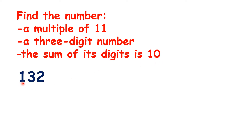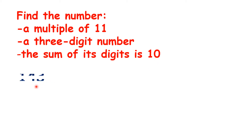Then we have one hundred and thirty-two, but the digits don't total ten. Now one hundred and forty-three, but the digits don't add up to ten. Now we have one hundred and fifty-four, and one plus five plus four is ten, and we know it's in the eleven times table because we've been counting up in steps of eleven, so that's our answer.